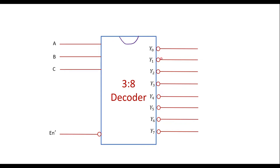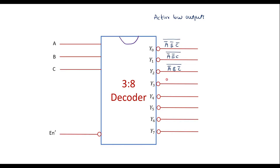This is the 3-to-8 decoder which has active low outputs. We have studied the 3-to-8 decoder before. For active low outputs, where active high output at line 0 was ā·b̄·c̄, since it is active low we take the complement — so output at line 0 is (ā·b̄·c̄)'. Similarly, line 2 is (ā·b·c̄)' and line 3 is (ā·b·c)'.